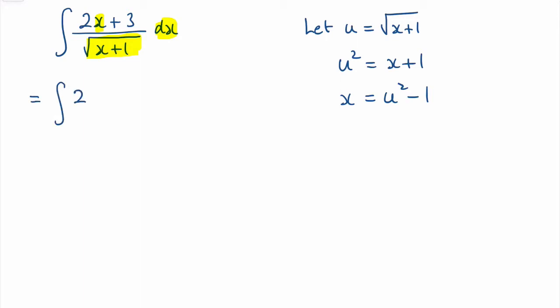So let's substitute in what we've got so far. We've got the integral of 2x, so that's 2 times u squared minus 1, plus 3, and that's all over the square root of x plus 1, which is now u.